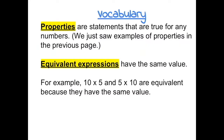Properties are statements that are true for any numbers. Some examples are the ones we just saw. Equivalent expressions have the same value. For example, 10 times 5 and 5 times 10 are equivalent because they both equal 50.